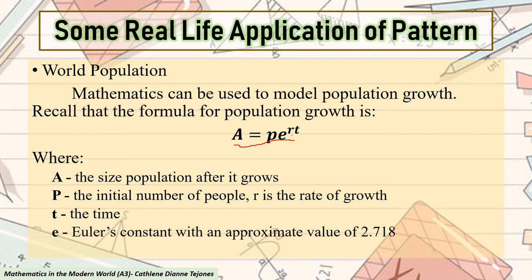Wherein, A is the size of the population after it grows. P is the initial number of people. R is the rate of growth, and T is the time. Remember that the time that we are pertaining here is the years.